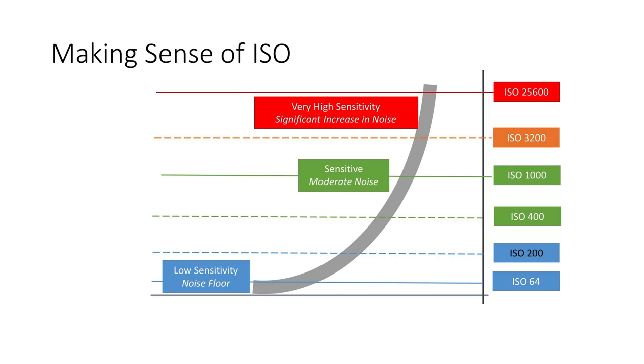Modern cameras have a massive sensitivity range — from being very insensitive at something like ISO 64, which would be fantastic for a studio situation, all the way up to many thousands, like ISO 64,000 or even higher. These give you a lot of capability for the range of shots you can do without a flash. However, there is a penalty: noise.